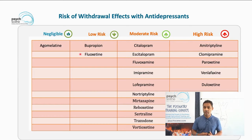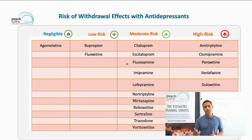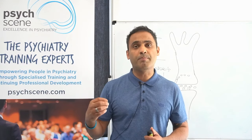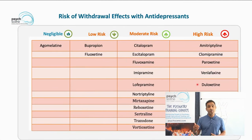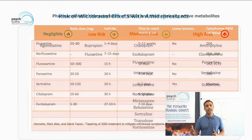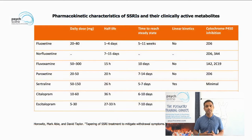Moderate-risk antidepressants include citalopram, escitalopram, and mirtazapine. Mirtazapine has an anti-histaminergic effect contributing to sedation and weight gain; stopping it can cause an anti-histaminergic rebound. Vortioxetine also carries moderate risk as a serotonin modulator. High-risk antidepressants include amitriptyline, clomipramine, paroxetine, venlafaxine, and duloxetine. Paroxetine's short half-life leads to a more severe withdrawal syndrome; similarly, venlafaxine and desmethylvenlafaxine have high rates of quite distressing withdrawal.